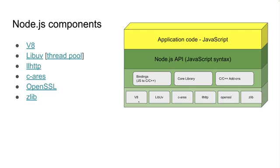If you want to make your own Node.js, just clone it, build it, install it — simple. LibUV is the thread pool. It can support up to 1024 threads. This library actually helps us with cross-platform asynchronous I/O. The event loop is implemented here.